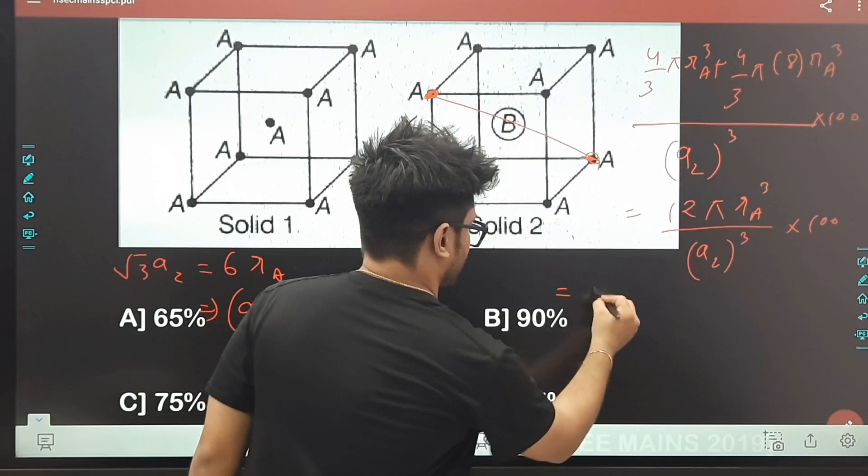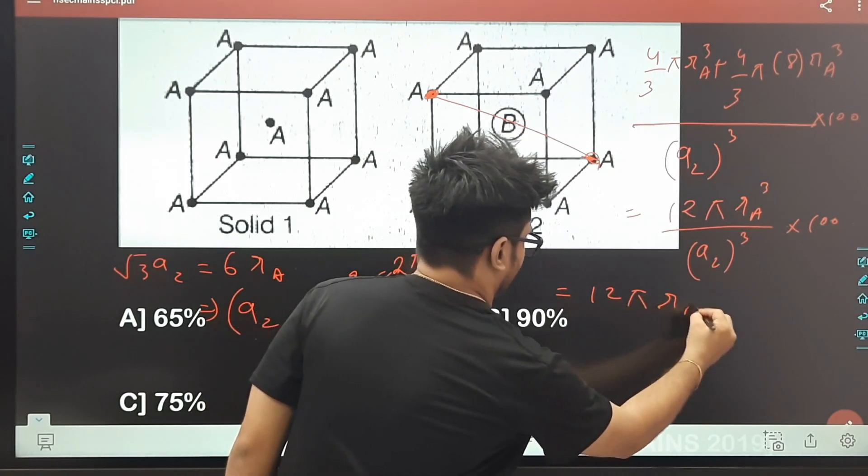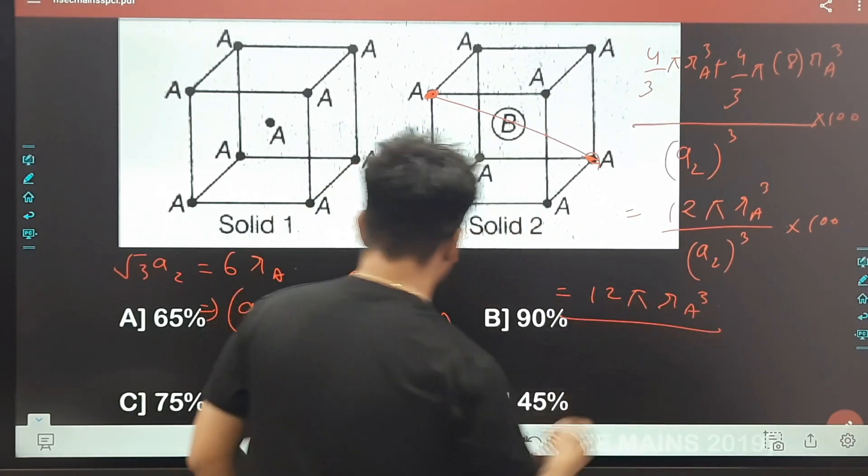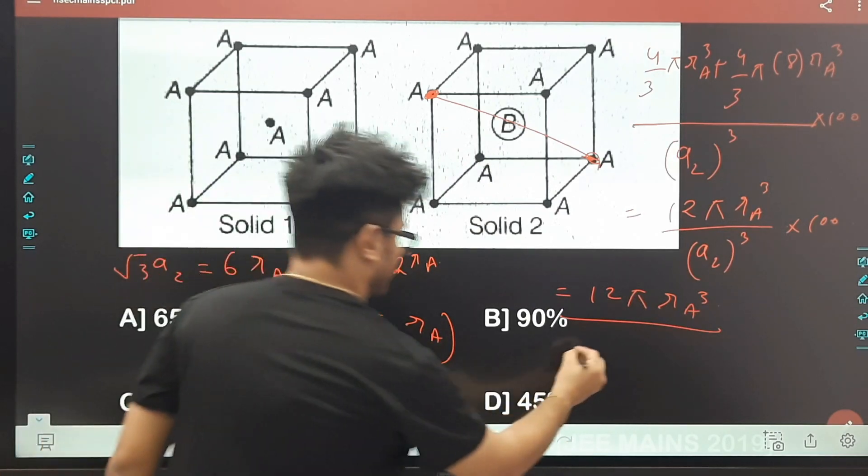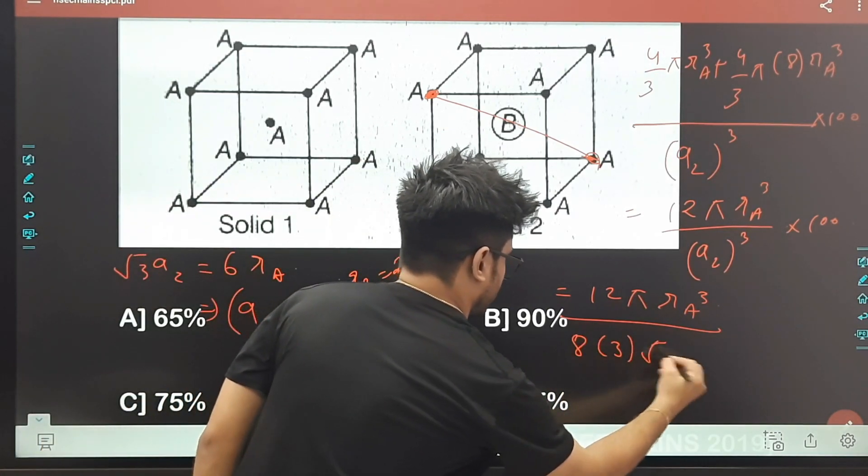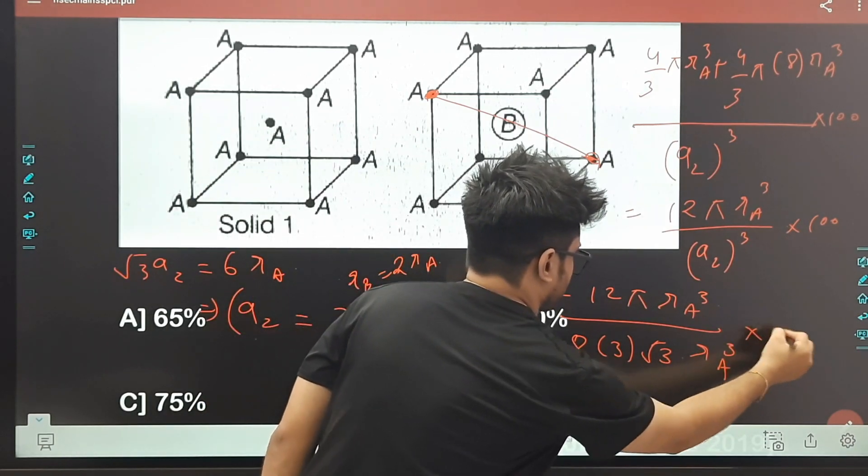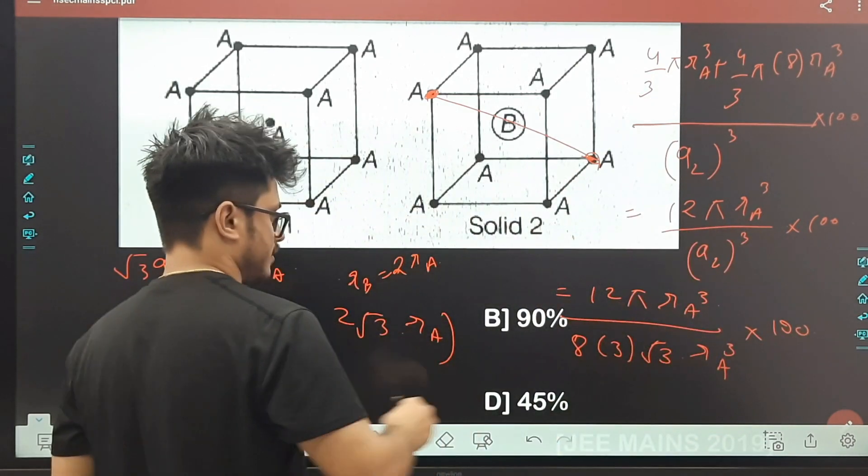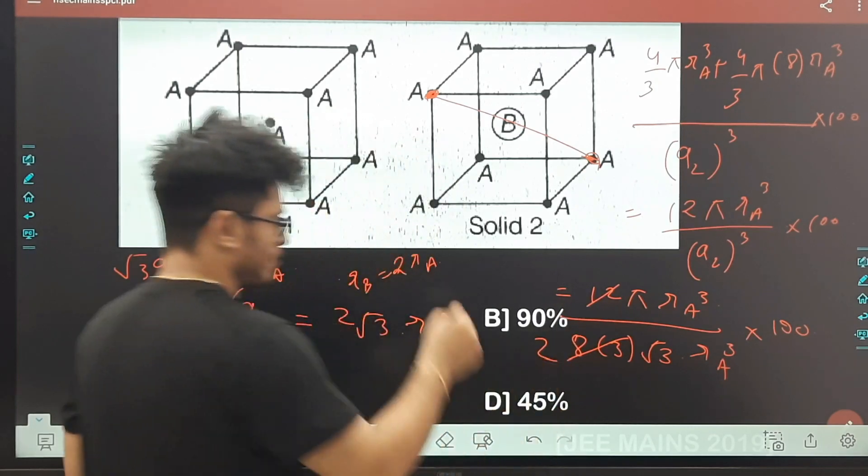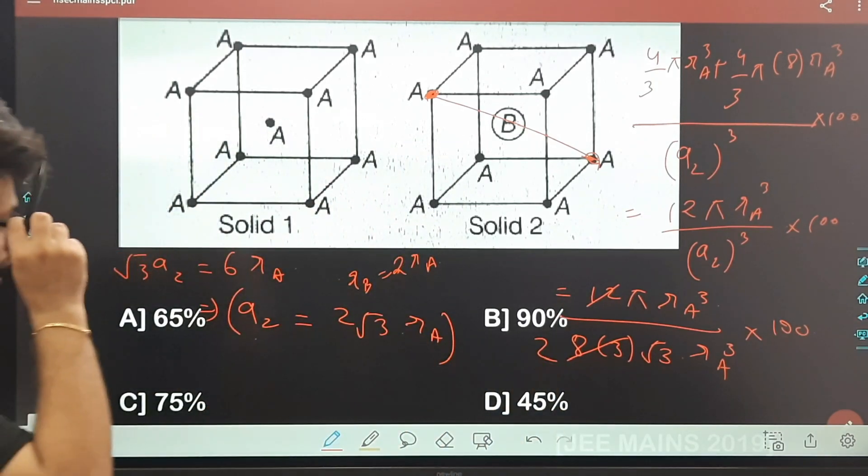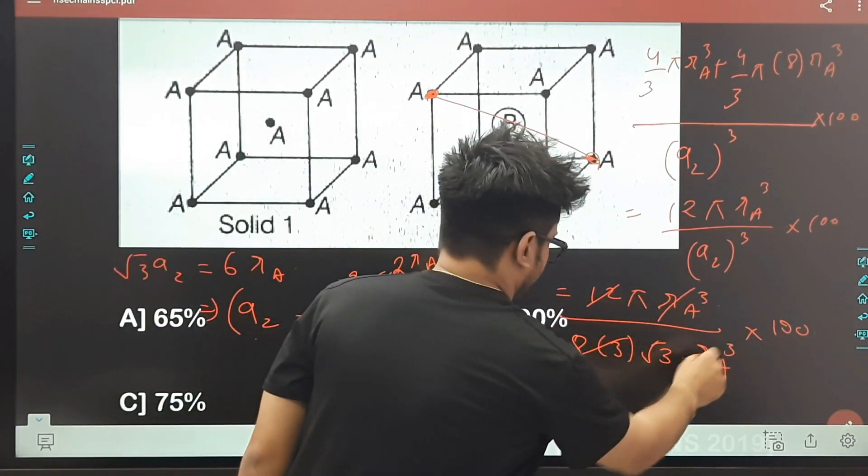To ye hoga kuch 12π rₐ³ upon (2√3)³, that will be 8 × 3 × √3, and rₐ³ into 100. And ye ab ho jayega 2, so π upon 2√3 rₐ³. rₐ³ cancel. π upon 2√3.